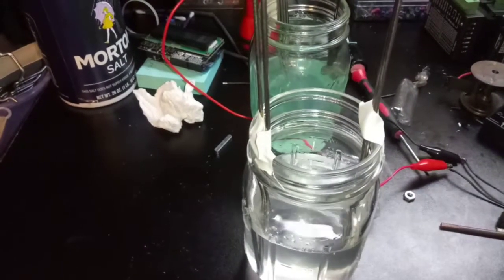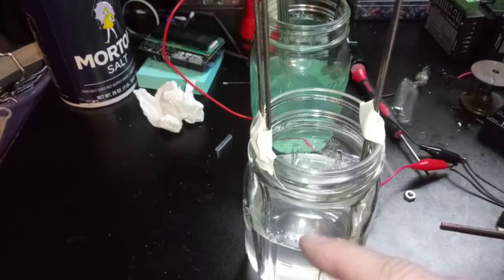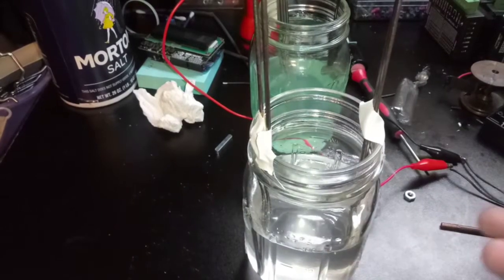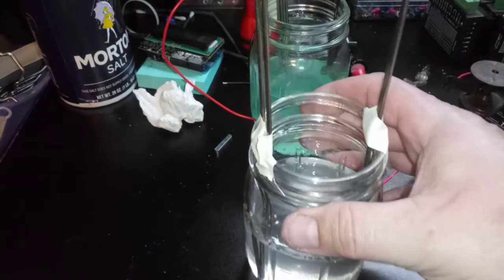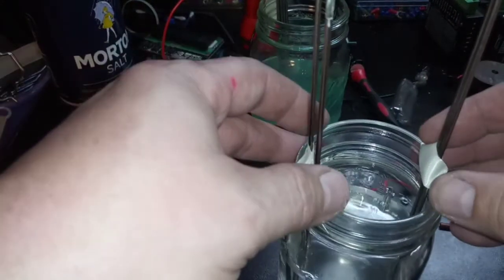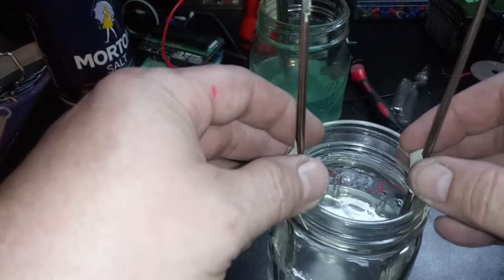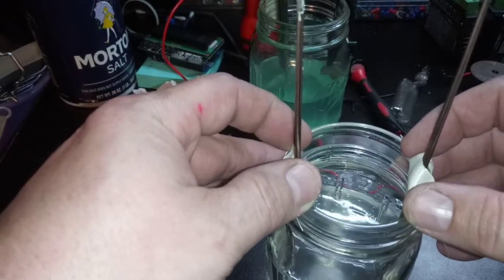So, here's what we've done. We put some salt in this vinegar mix to make it more conductive. Now, these rods right here are nickel. Nickel TIG welding rods I happen to have laying around.